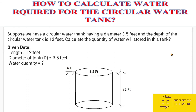Welcome to the quantity survey course. In this lecture we will discuss the quantity of water required for a circular tank to store water. Suppose we have a circular water tank having a diameter of 3.5 feet and a depth of 12 feet. Calculate the quantity of water that will be stored in this tank. Given data: depth is 12 feet and diameter is 3.5 feet.